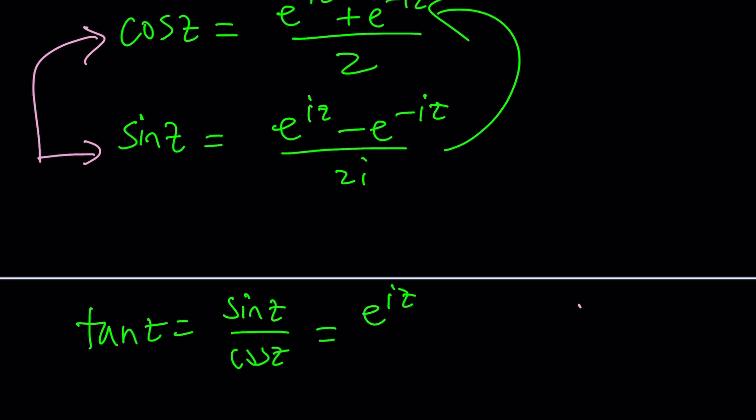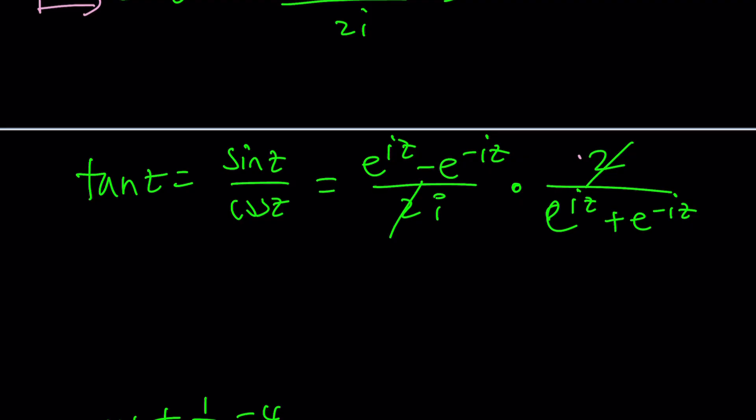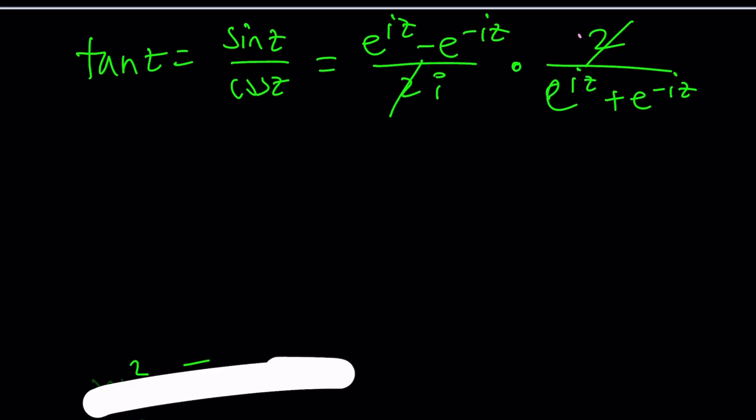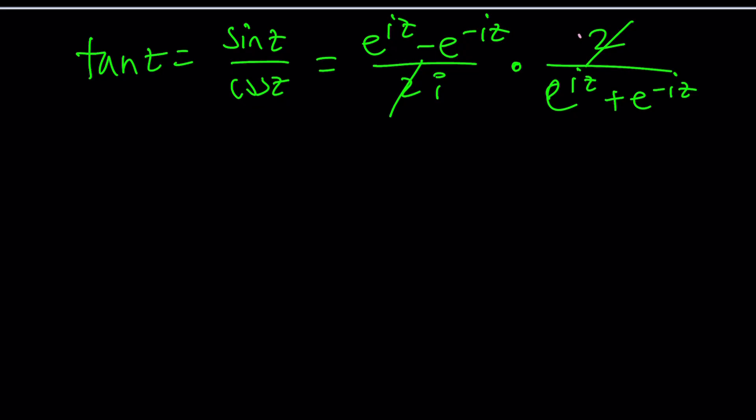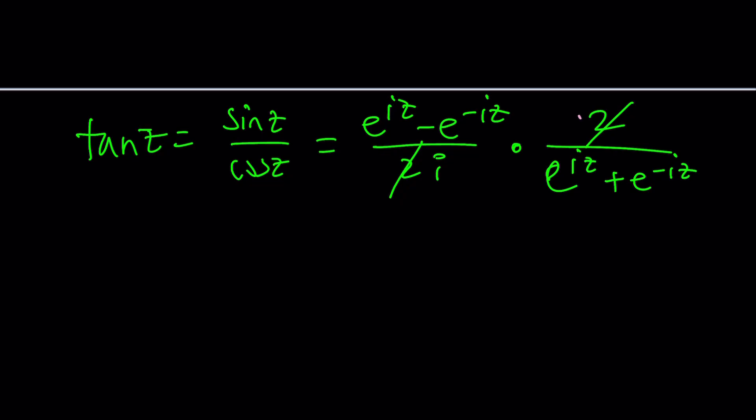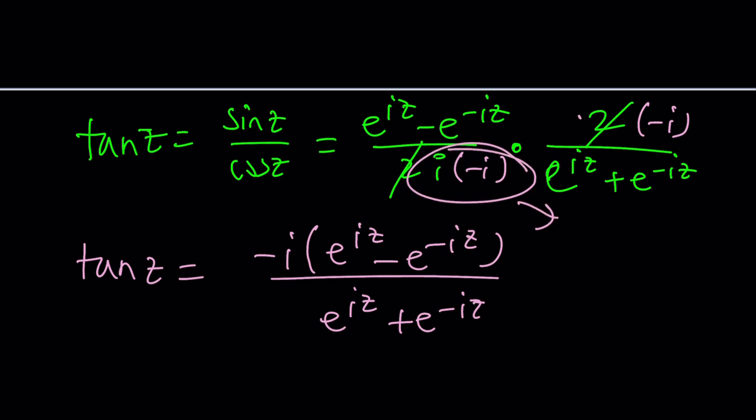This is e to the iz minus e to the negative iz divided by 2i, multiply by the reciprocal of cosine, which is 2 over e to the iz plus e to the negative iz. They don't cancel out, but if you want, you can multiply the top and the bottom by e to the power iz to get rid of anything with a negative exponent. You can do that. From there, we're going to find the value. But here's what I would recommend. Multiplying by negative i will take care of this. So we're going to have negative i in the numerator, multiply by e to the iz minus e to the negative iz, and all of that is divided by e to the iz plus e to the negative iz, because negative i squared is 1.